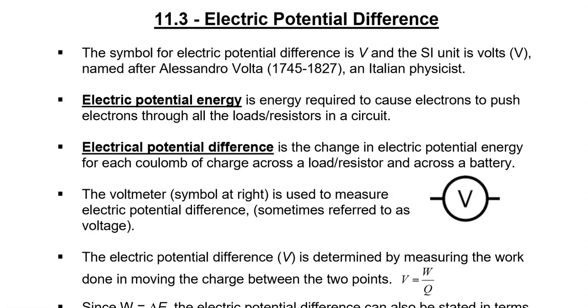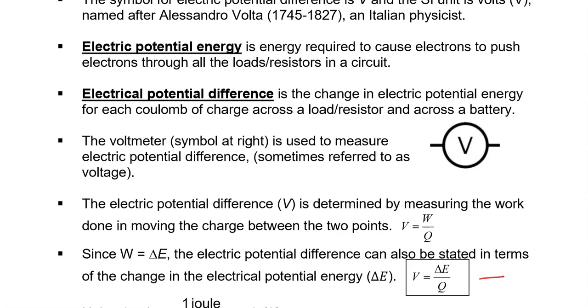Electric potential difference is the change in the electric potential energy for each coulomb of charge across a load or a resistor and across a battery. It may make a little bit of sense if you look at this equation right down here. The electric potential difference, V, is equal to the change in energy divided by the charge in coulombs. The energy measured in joules, charge in coulombs. That's a Q. So that is what electric potential difference is. And so what you saw a minute ago is you saw all these electrons moving around a circuit. Hence, they had to have energy. And so it's the amount of energy they have per charge.